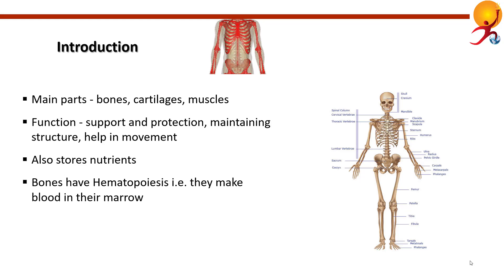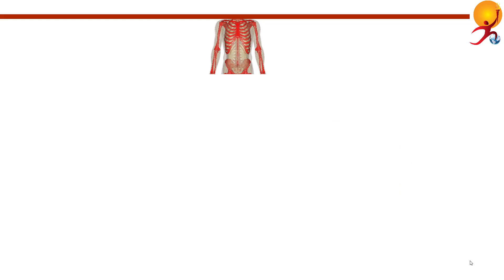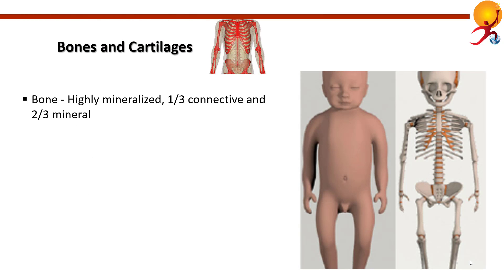Bones also have the function of hematopoiesis, which is the making of blood cells in their marrow. Bone is a highly mineralized tissue in which connective tissue is one third while mineral is two thirds. Apart from providing mechanical strength, the bone works as a homeostatic reservoir for ions such as calcium, magnesium, and phosphorus, meaning bones have a very important function in regulating the acid-base balance of the body.